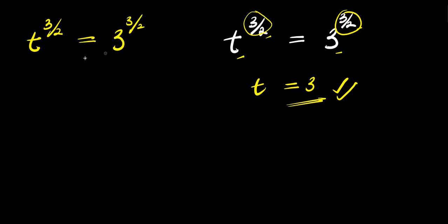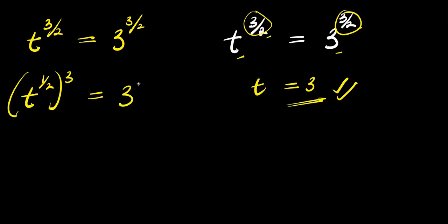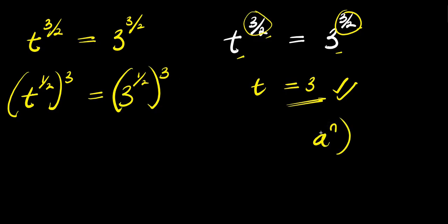What we are going to do is factor out this 3, so we can have it as t to the power of 1 over 2, raised to the power of 3, and this equals 3 to the power of 1 over 2, raised to the power of 3. Don't forget that if you have a to the power of n raised to the power of n, it equals a to the power of n times n.